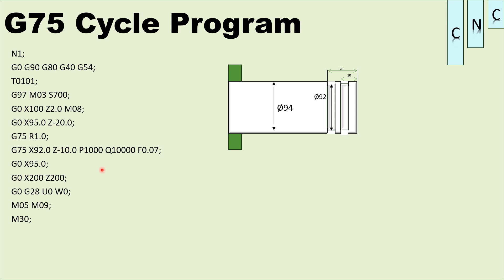That 10mm is the travel distance we need to cut. The starting position is X95. D1.0 is 1mm — this is the 1mm increment per pass.